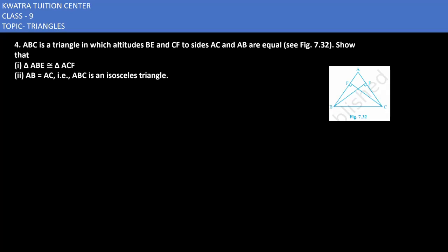So what is given in this case is BE is equal to CF. Now I have to prove that triangle ABE is congruent to triangle ACF. So I need to look for three terms which must be there in both of the triangles. So first thing I can write is BE is equal to CF. It would be given in nature.